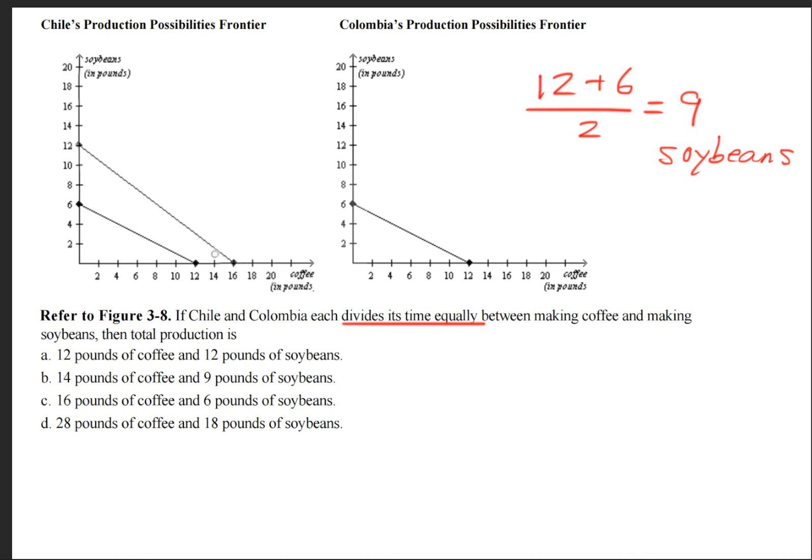And conversely, we do the same thing for the coffee. So we do 16 plus 12 and we divide that by 2, and we get 14 units of, or 14 pounds of coffee.